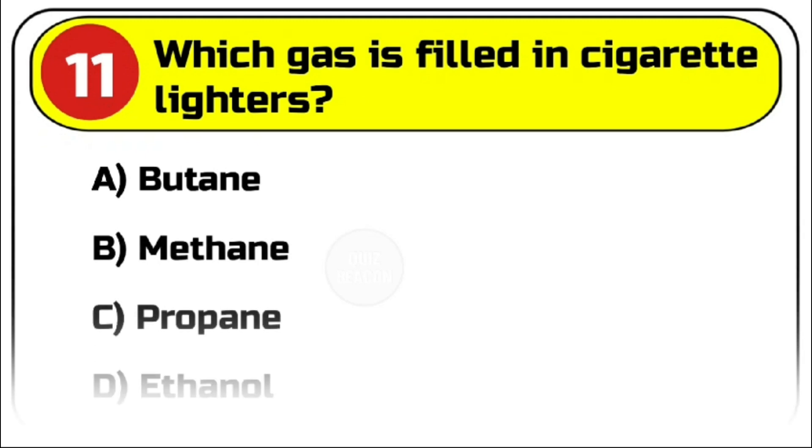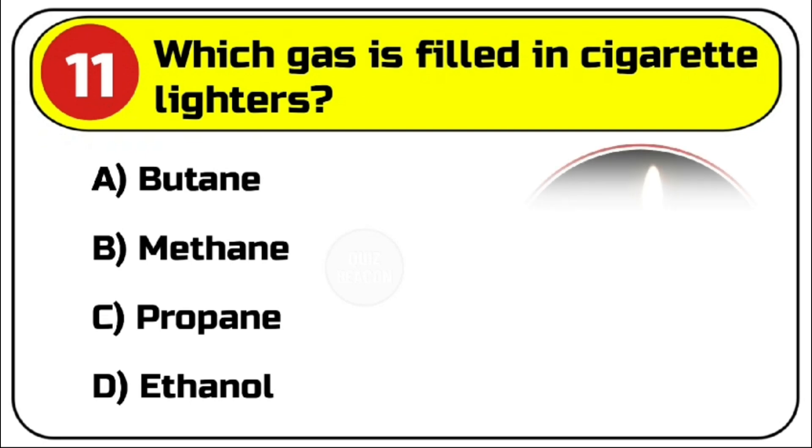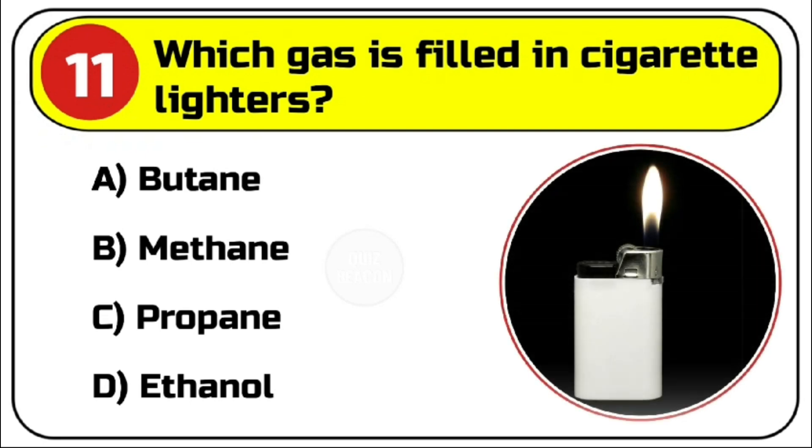Question number 11. Which gas is filled in cigarette lighters? Options are A. Butane. B. Methane. C. Propane. D. Ethanol.